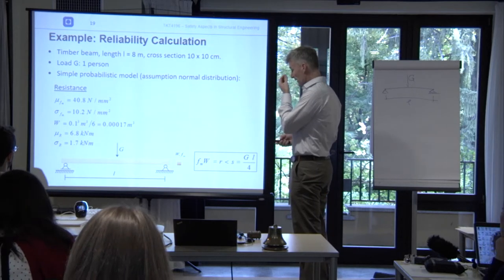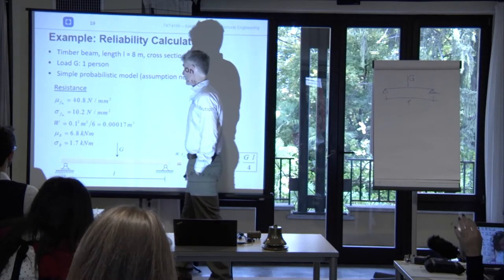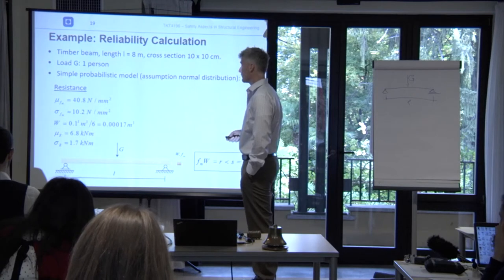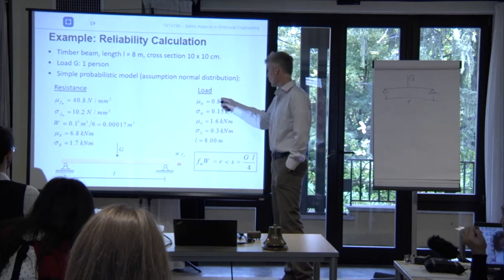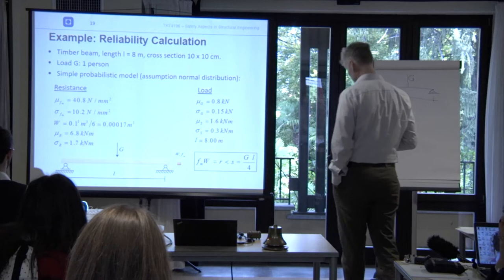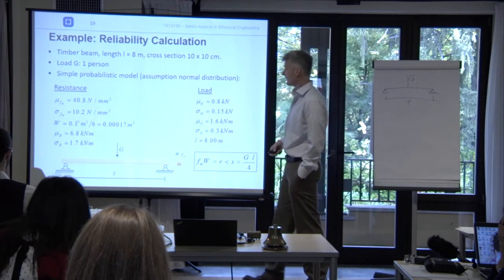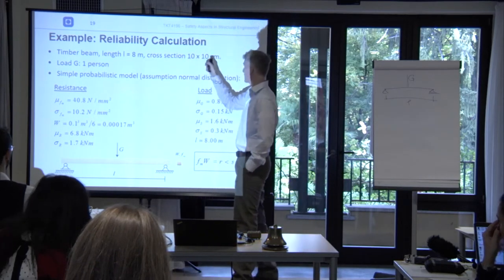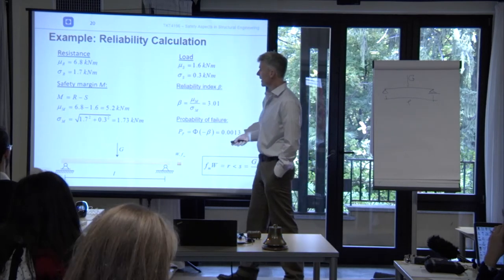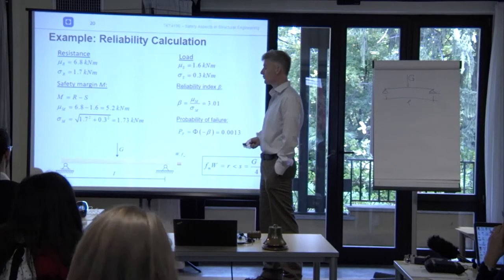Now we put numbers on the example. We have timber bending strength with a mean of 40.8 N/mm² and a standard deviation corresponding to 25% coefficient of variation. The load is the force induced by a person's weight, with a mean of 0.8 kN and standard deviation of 0.15. The span is 8 meters and the cross section is 10×10 cm. Following this scheme, we compute the mean and standard deviation of R and S, then of M, and get β equal to 3.